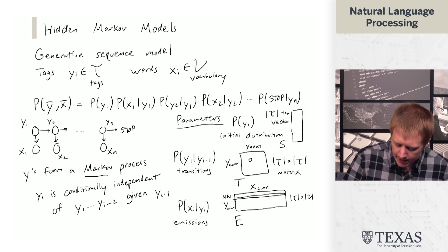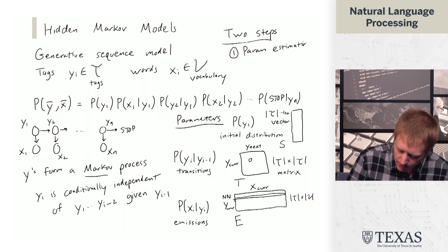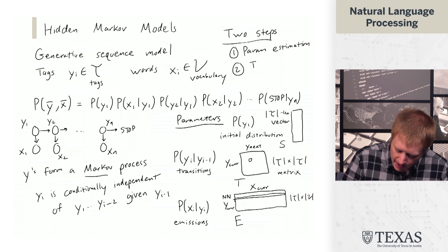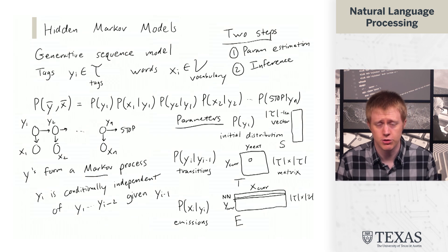Okay, so there's two steps that we need to take in order to use this model. The first is parameter estimation. You know, given data, how do we get values for these parameters? And the second is inference. So given this model, how do we actually use it to part of speech tag a sentence? And so these are the two topics that we're going to talk about next, and that's the end of this segment.